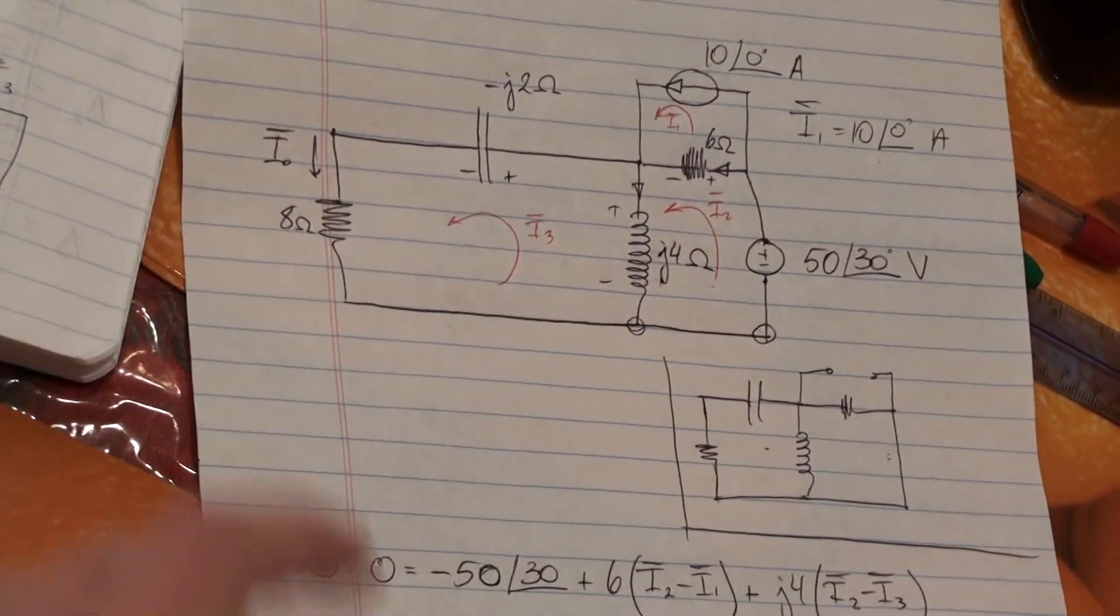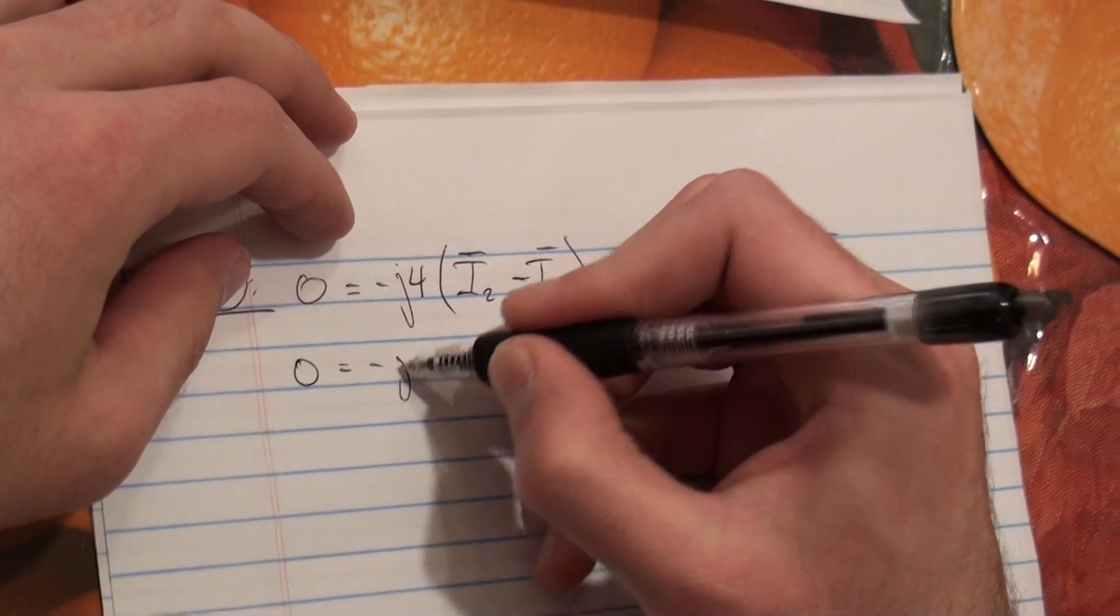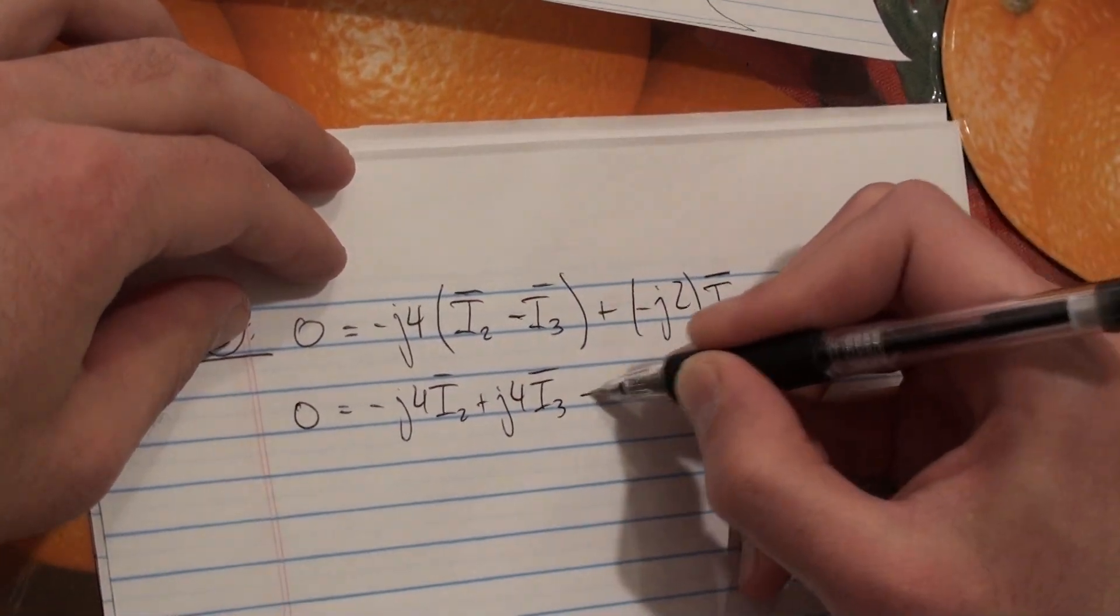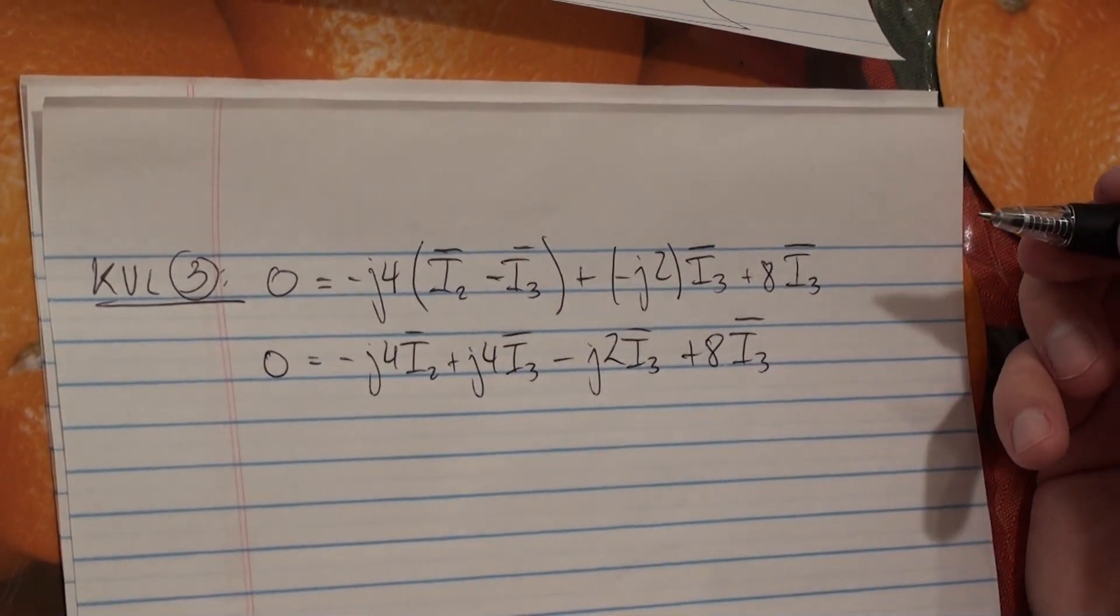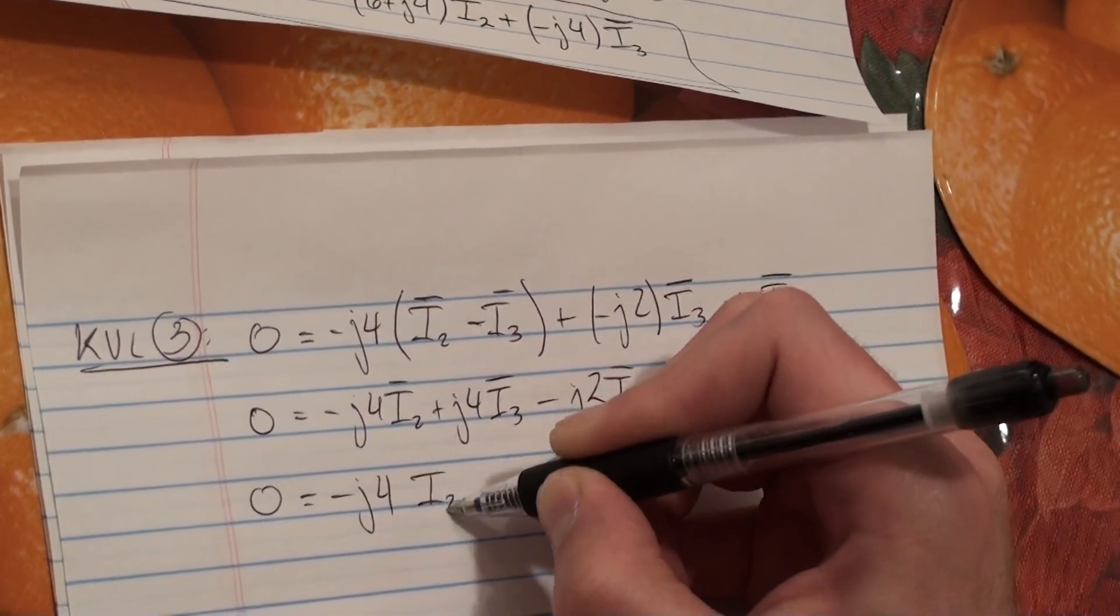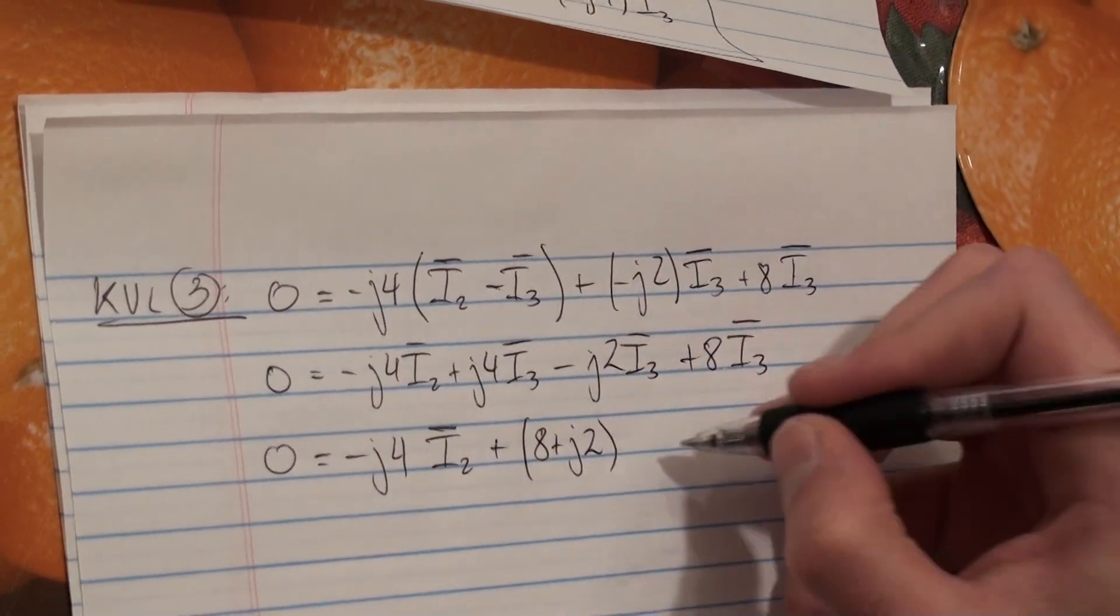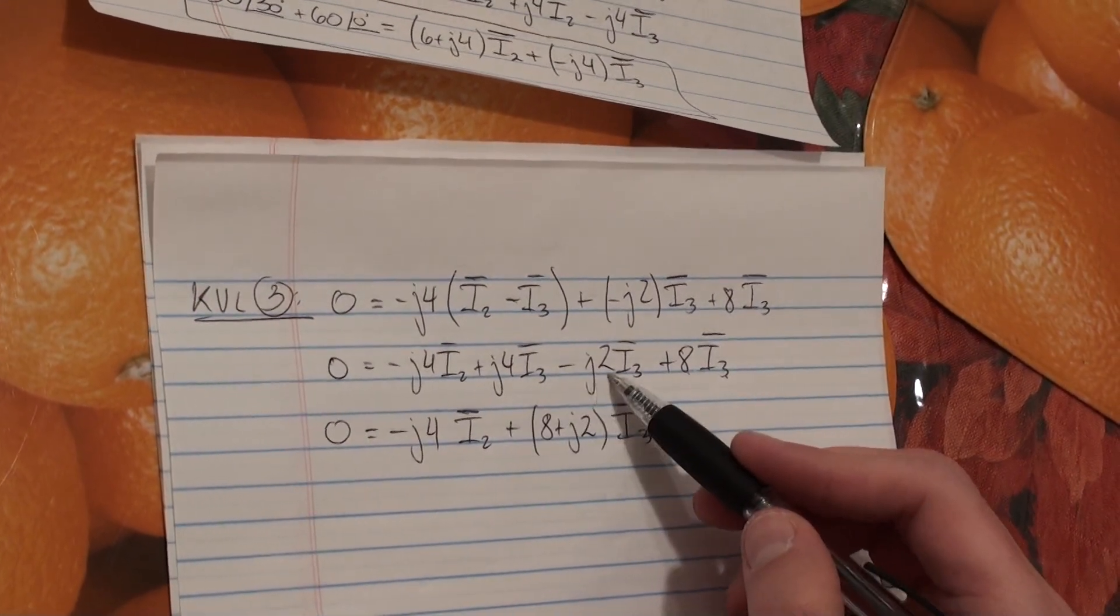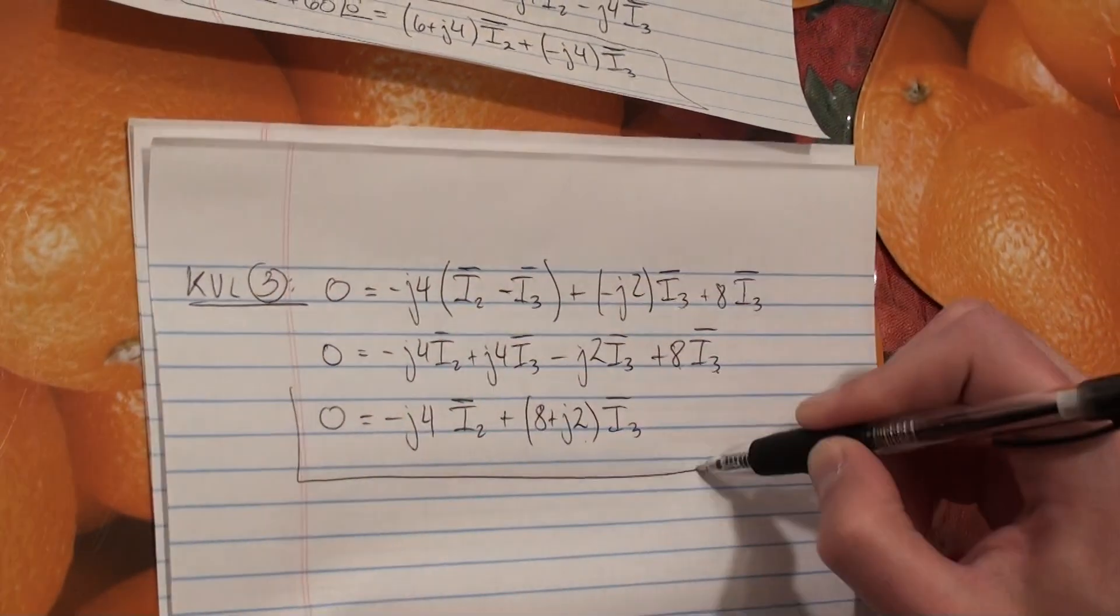Now notice that the current that we're looking for, I0, is really just I3. So let's open parentheses. So this becomes minus J4 I2, plus J4 I3, minus J2 I3, plus 8 I3. So combining like terms, we're going to get minus J4 I2, plus 8 plus J2 I3. So you have the I3 terms, right? You have 8 plus J4 minus J2 becomes plus J2. That's all I did. So this is your second equation.